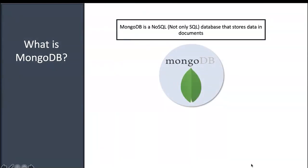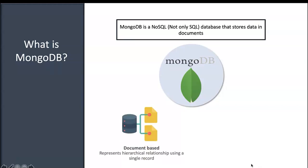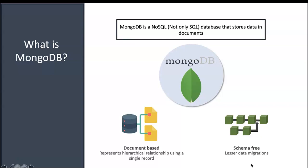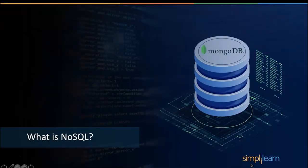MongoDB is known as a document-based database which stores data in documents. NoSQL does not mean 'no to SQL' — it means 'not only SQL,' meaning it supports other approaches too. The document-based model represents typical hierarchical relationships using single records, showing how records relate to each other. It is a pure schema-free environment, so you do not need to define a schema before development, giving you far more flexibility in a completely unorganized environment.